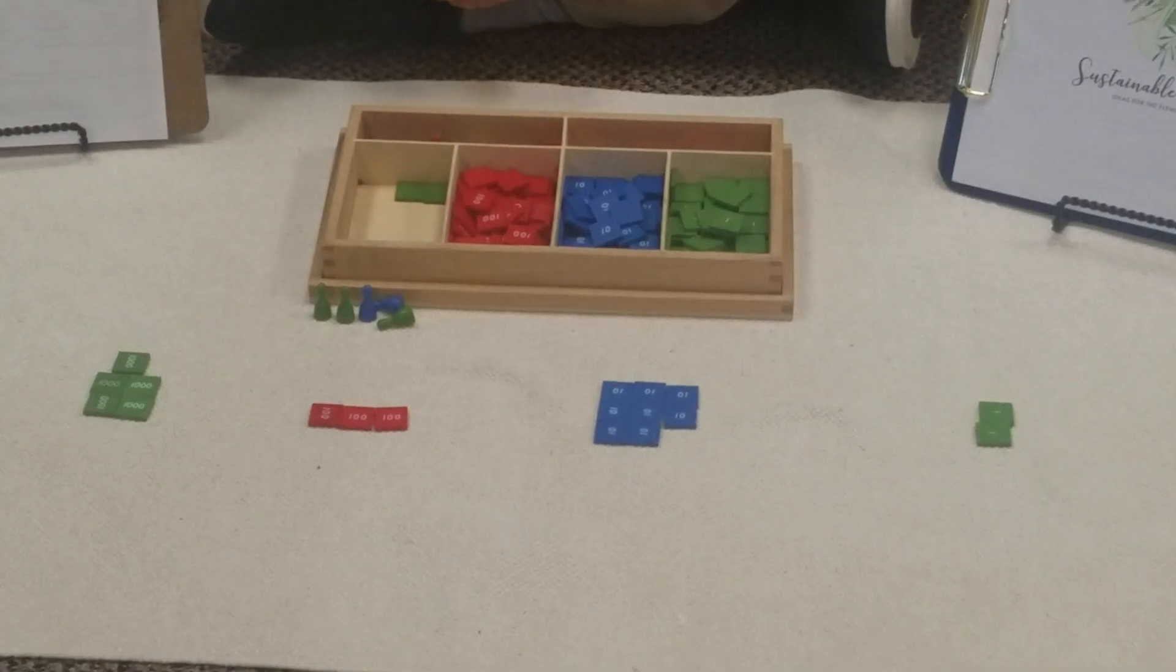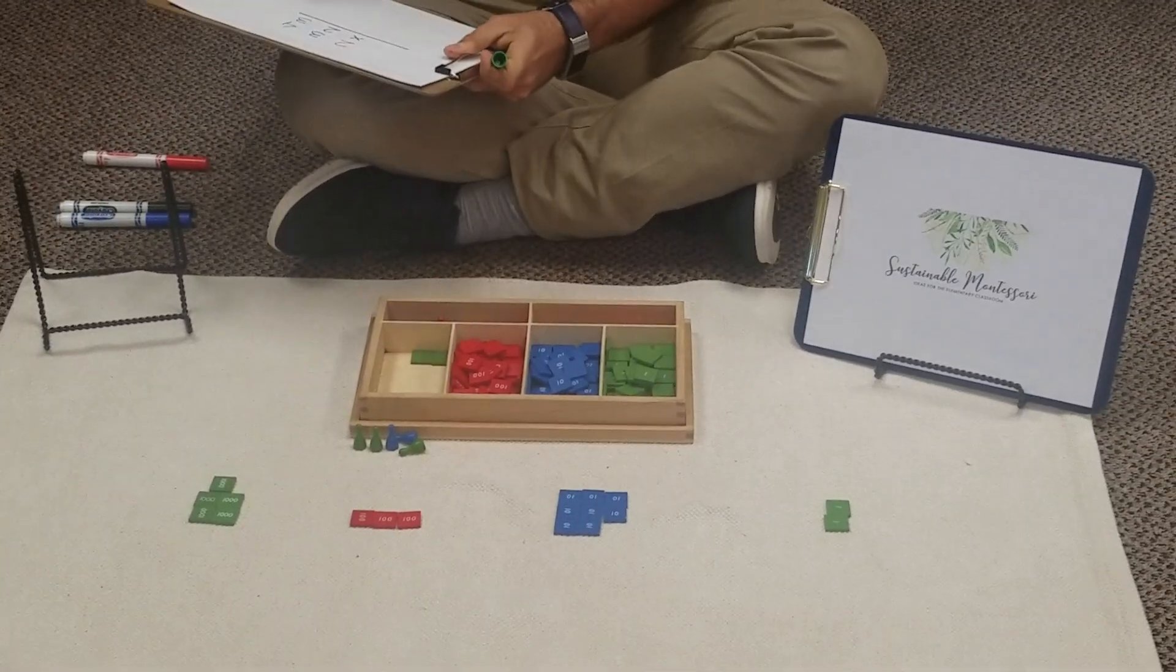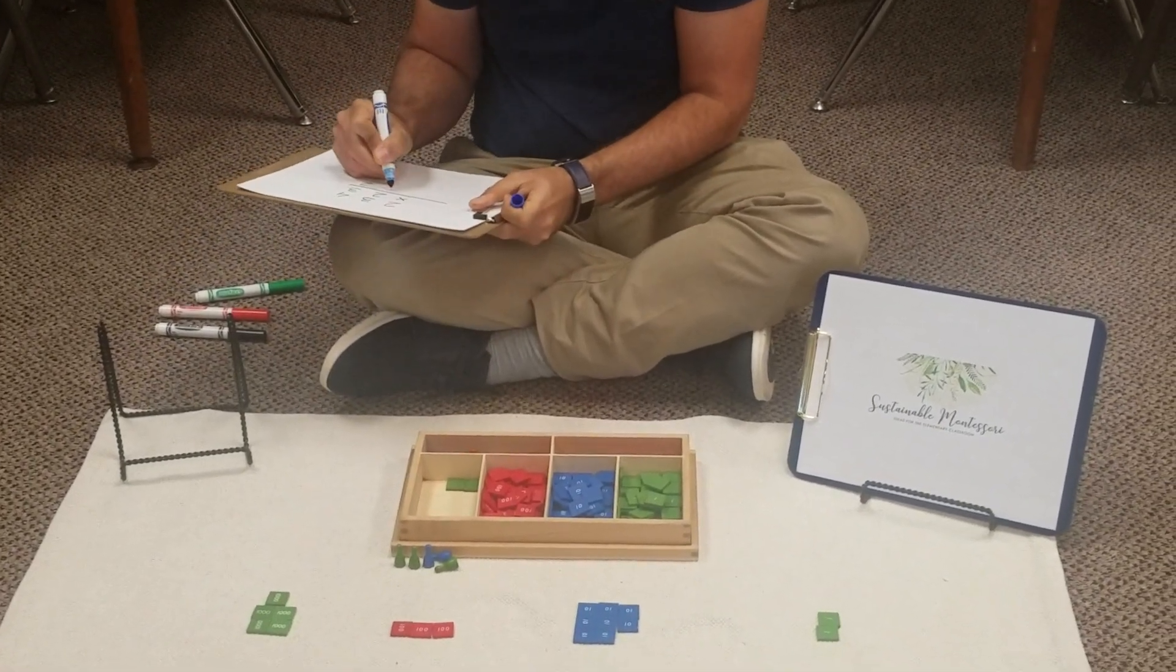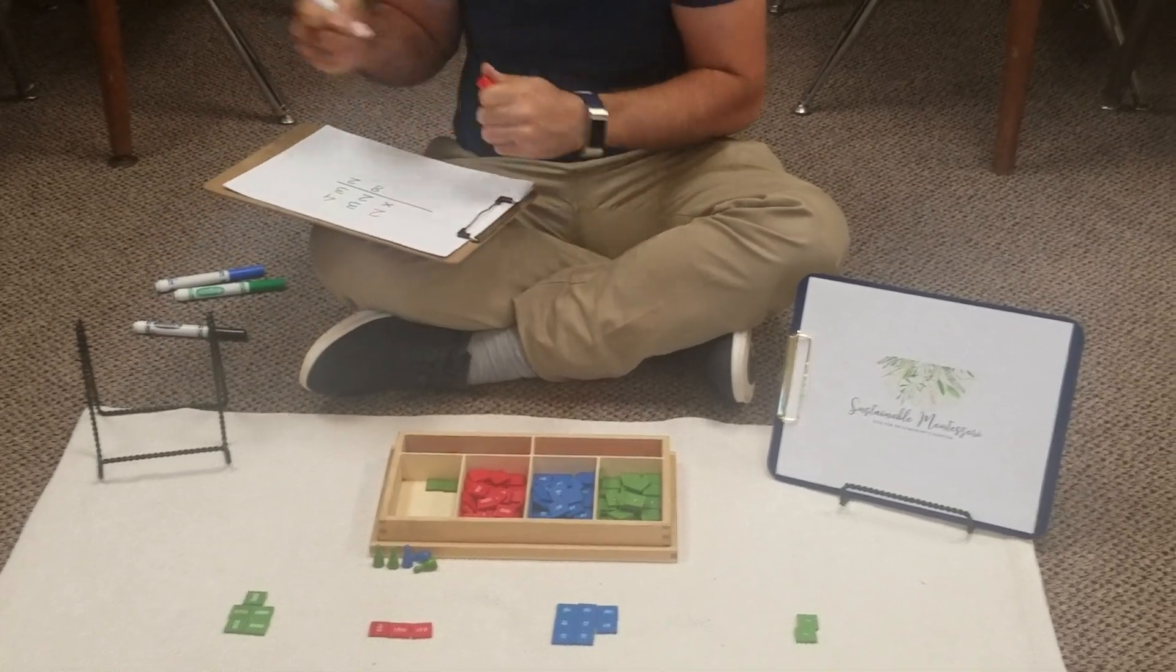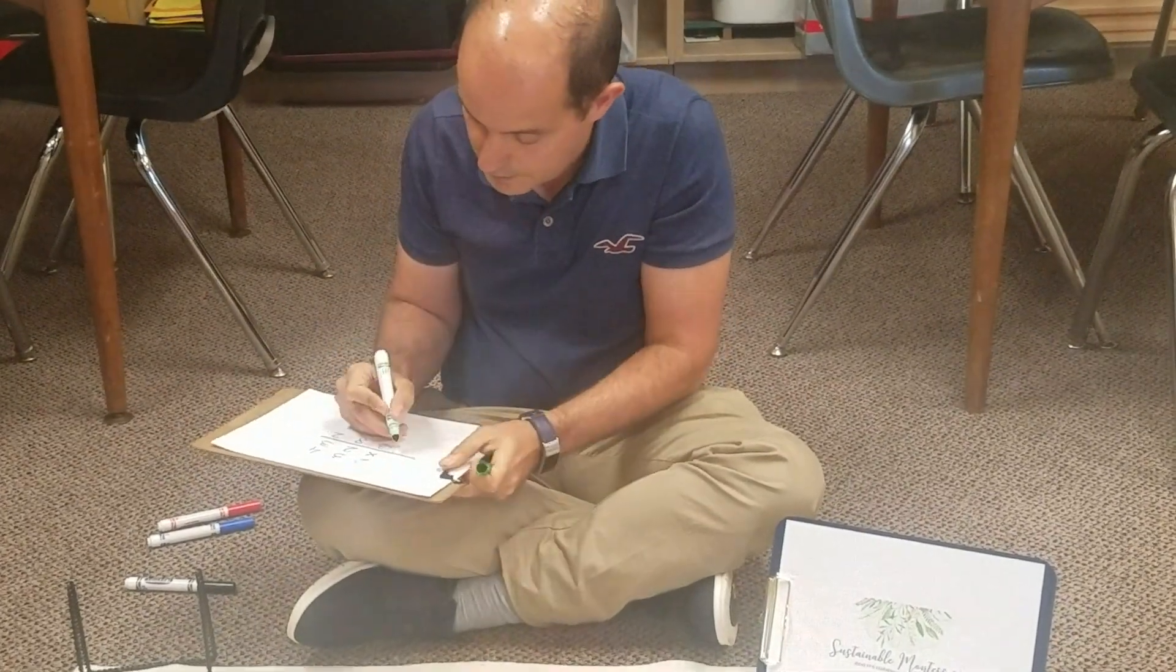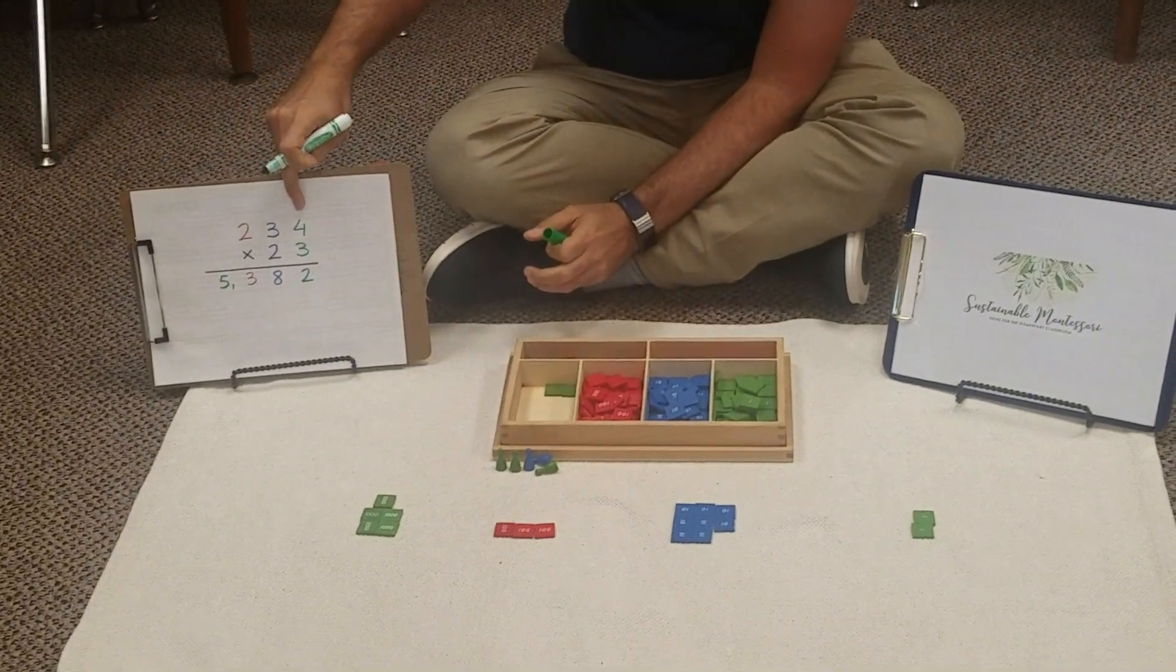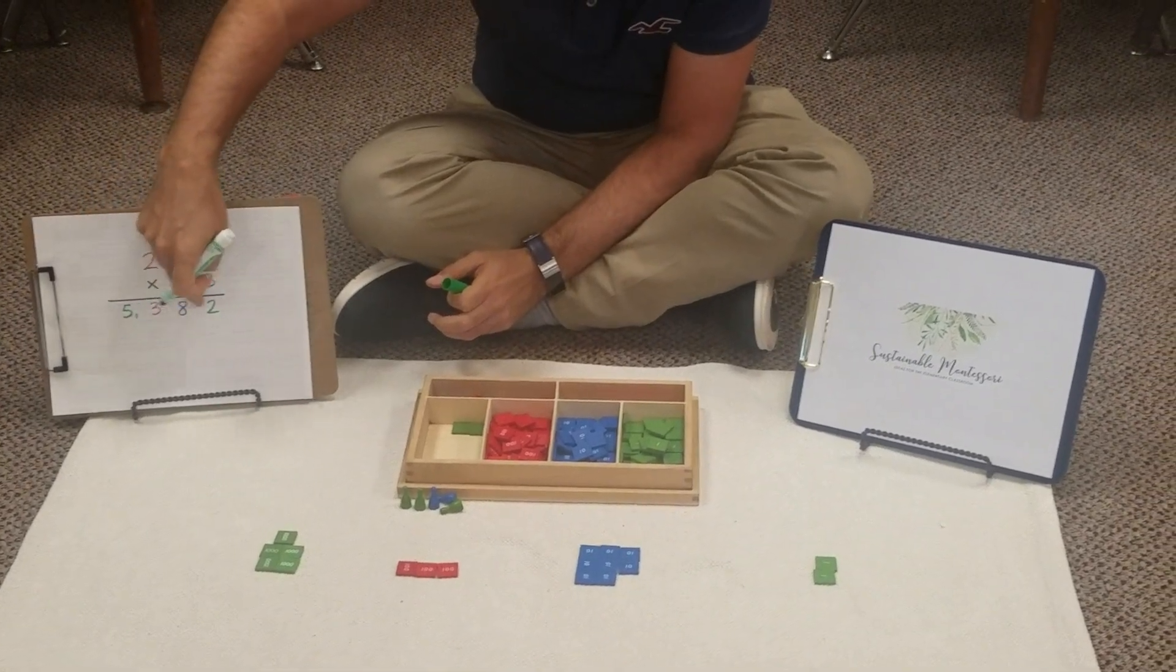So the answer, I can write it down, will be two units, eight tens, three hundreds, and five thousand. So basically, if we multiply 234 times 23, the answer would be five thousand three hundred eighty-two.